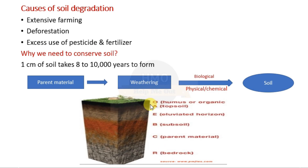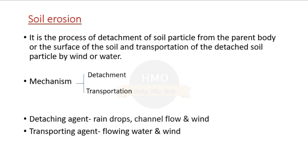The first two top horizons are O and A. The O horizon is rich in organic matter, and the A horizon is rich in minerals. During soil erosion, the topmost layer is eroded first. That is why we need to conserve the soil — because soil is very important for cultivation and to fulfill the needs of future generations.